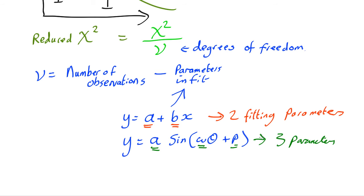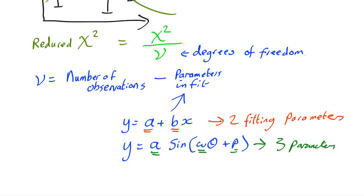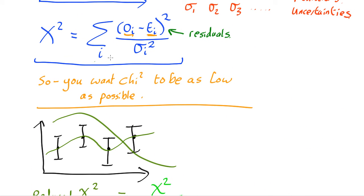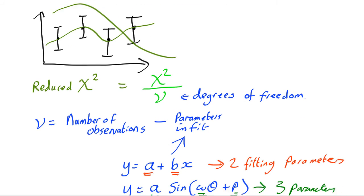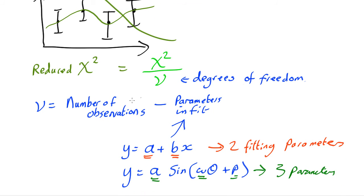So this is what you do. You work out the chi-squared value using the equation up here as before. You work out, take the number of data points, subtract off the number of parameters in your fit. So two in this case, three in this case. That gives you the number of degrees of freedom. Divide chi-squared by that.